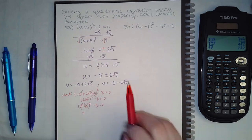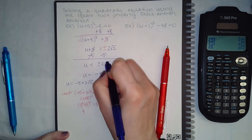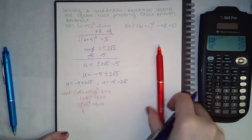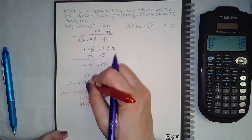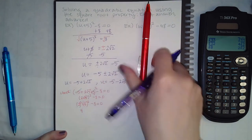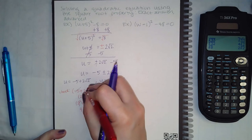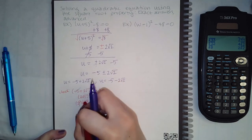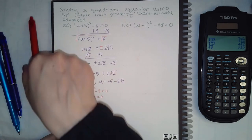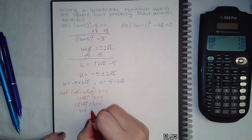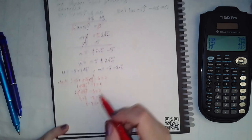I noticed an error here — I wrote 2 square root of 5 but it should be 2 square root of 2. It happens to all of us; our eyes play tricks. It's always good to double and triple check. These should be 2's inside the radical, not 5's. With the correction, when the square cancels I get a 2, and 8 minus 8 equals 0, so this answer checks out.